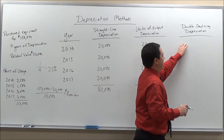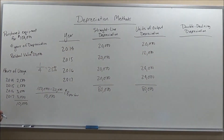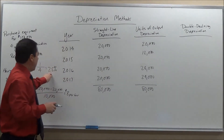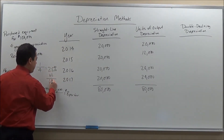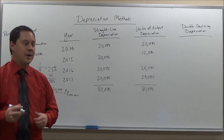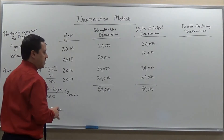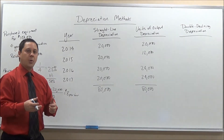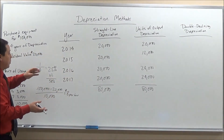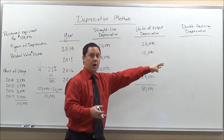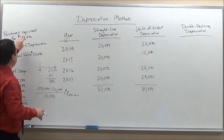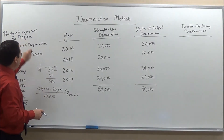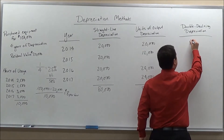Now let's look at double declining balance depreciation. As the name states, we double the straight line rate. So we take our straight line rate of 25% and multiply it by 2, giving us 50% per year. This method is different because we don't start with the depreciable amount of $80,000 — instead we start with the full cost of the equipment, the $100,000.